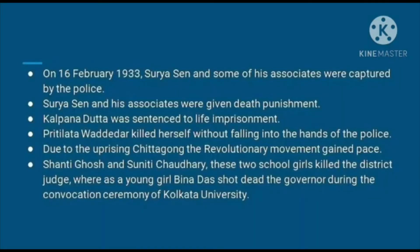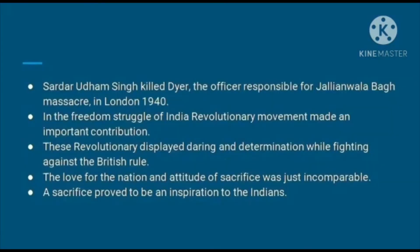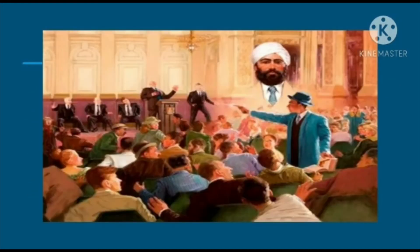During this uprising, the Chittagong revolutionary movement gained pace. Shanti Ghosh and Suniti Chaudhary, two school girls, killed the district magistrate. The young girl Beena Das shot the governor during the convocation ceremony of Kolkata University. Another revolutionary, Sardar Udham Singh, killed Dyer — the officer responsible for the Jallianwala Bagh massacre — in London in 1940.